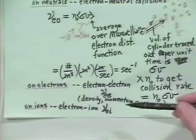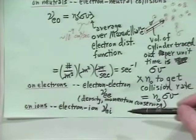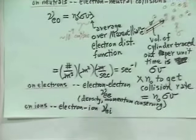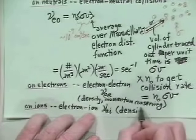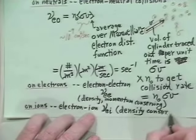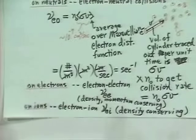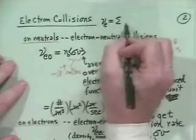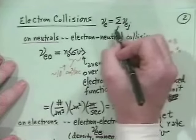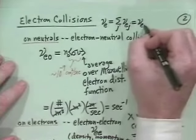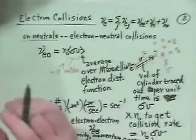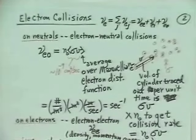Electron-ion collisions conserve electron density but not momentum. Often people define an overall collision frequency ν as the sum over all species: ν_ee + ν_ei + ν_e0 — just the total collision frequency for collisions with all other species.